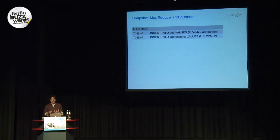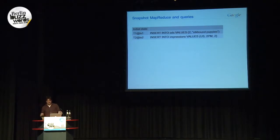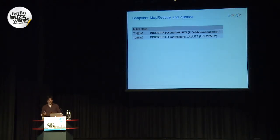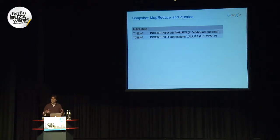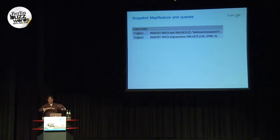The way people have gotten around this, where they really needed a consistent view of a large dataset, is to build a specialized system that serializes every update through a single central server — in effect, just one partition. This works okay if all the updates are originating near that server, but it doesn't work well in Spanner's central design point, which is that users and data are distributed all over the world.